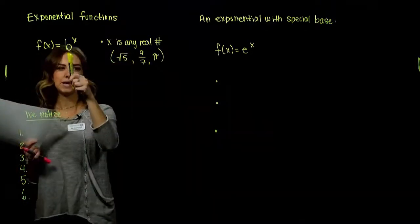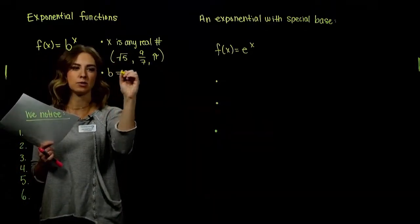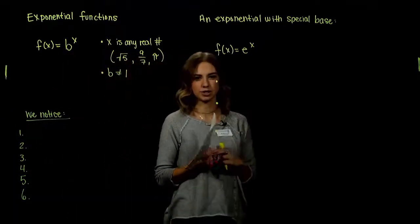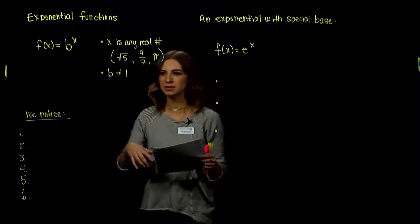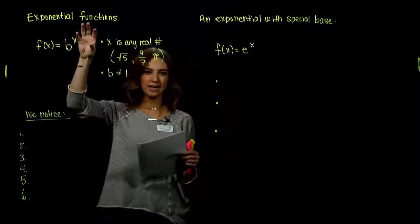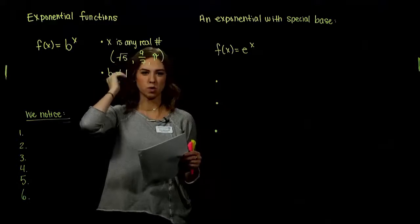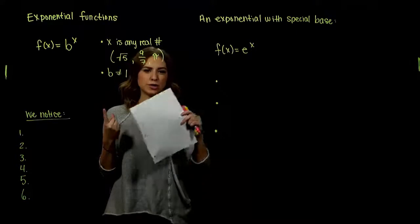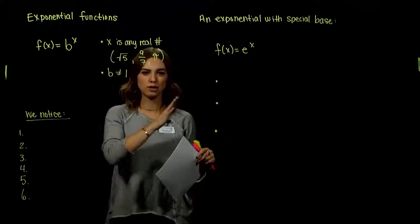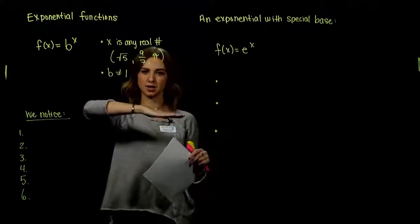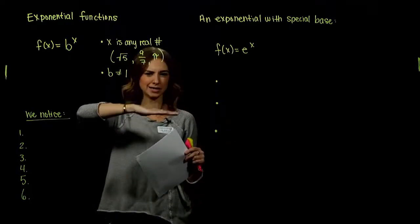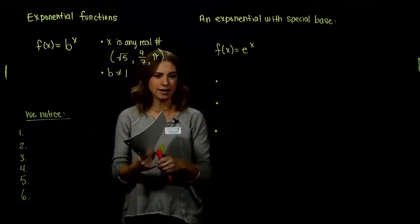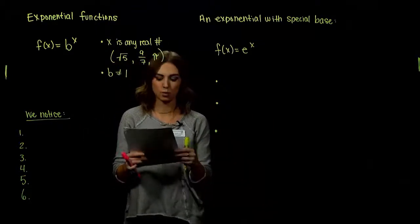The base b cannot equal 1. If b were 1, then 1 raised to any power is always 1 — 1 to the third is 1, 1 to the fourth is 1. It's not growing exponentially; it's constant at 1 everywhere. That's a boring case — it's not exponential. So b is restricted and can't be 1.